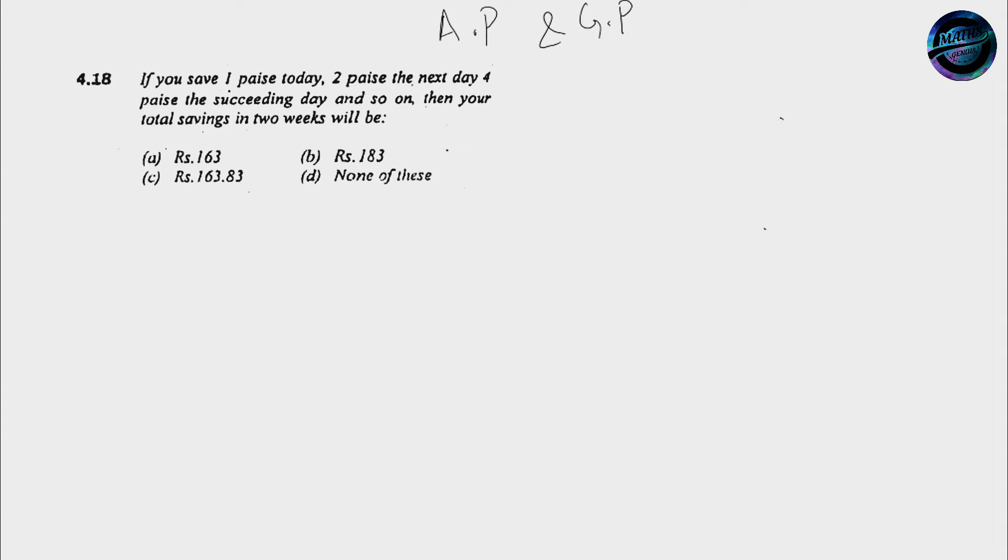For example, if it's a question that if you save 1 paisa today, 2 paisa in the next day and 4 paisa in the succeeding day onwards, we can write it simply that A1 is equal to 1 over here, A2 is equal to 2 and the third term that is A3 is 4.